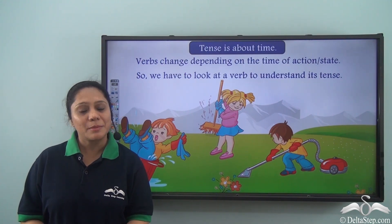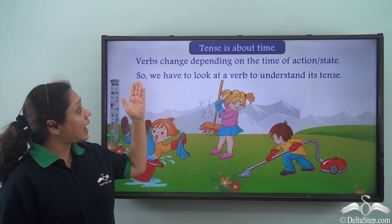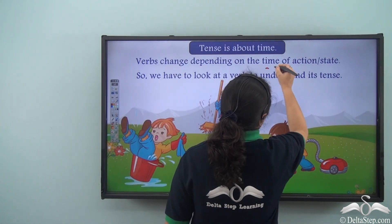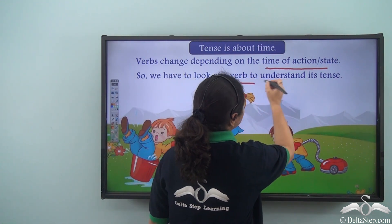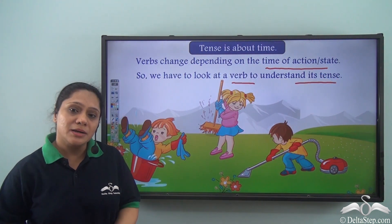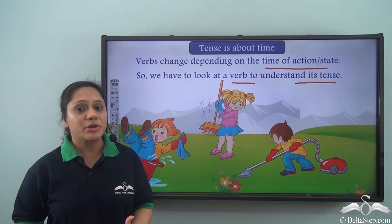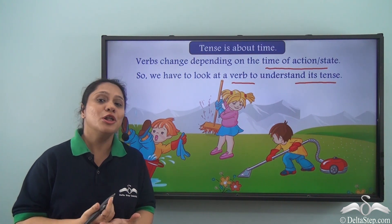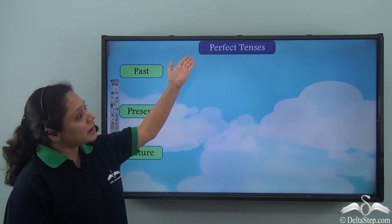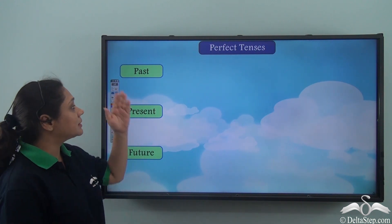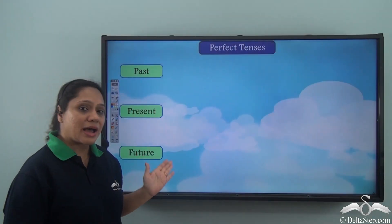By now you are very clear about the concept of tenses. A tense is about time, and verbs change depending on the time of action or state. We have to look at a verb to understand its tense. You have learnt about various kinds of perfect tenses individually. Today we are going to revise them together and do lots of exercises. The perfect tenses are of three kinds: the past perfect tense, the present perfect tense, and the future perfect tense.